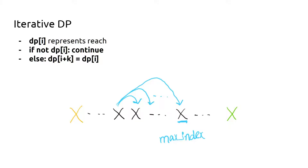Let dp[i] represent whether we can reach index i — true if reachable, false otherwise. The logic is: if dp[i] is false, skip over it. But if dp[i] is true, then set dp[i + k] equal to dp[i], meaning if you can reach index i, you can also reach all indices i plus k within range. This is the entire core logic.